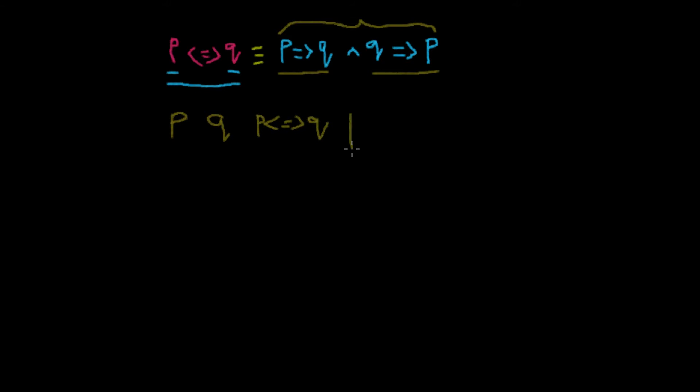In this row we have P implies Q, so we call this P implies Q as 1. Just for simplification, we can call Q implies P as 2, that's easy to remember.